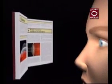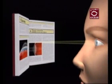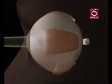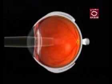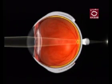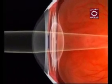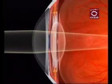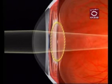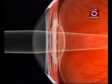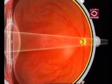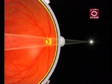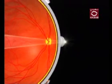Rays of light from near objects such as a printed page are divergent in nature and will come to a focus behind the retina. In order for this light to focus on the retina, accommodation occurs. During accommodation, the ciliary muscle contracts, causing the crystalline lens to assume a more convex shape, which refocuses light back onto the retina.